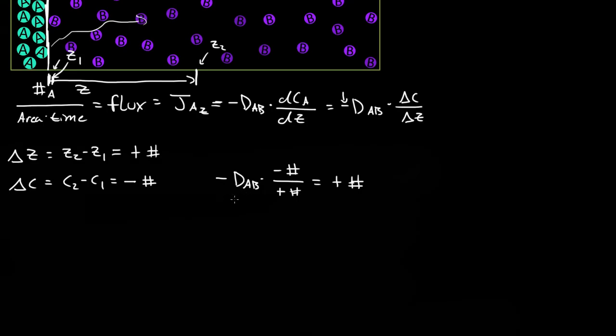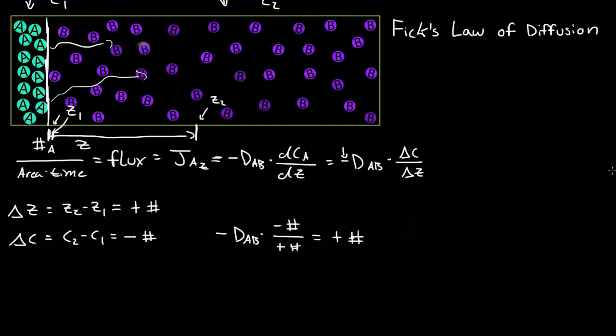So what exactly is this D_AB? Well it's actually unique to the two particles. If maybe B was bigger, it would be different. If A was bigger, it would be different. You can't say, I know the diffusion coefficient of oxygen. You have to say, I know the diffusion coefficient of oxygen into B. Or I know the diffusion coefficient of oxygen into nitrogen. You cannot say you know the diffusion coefficient of oxygen. You need to know what it's diffusing into.